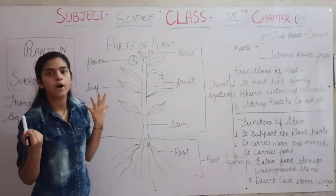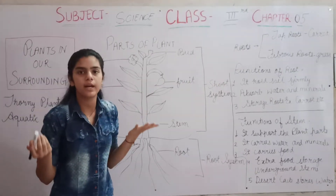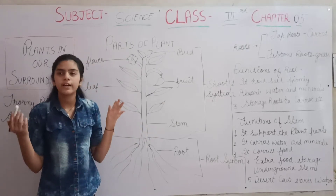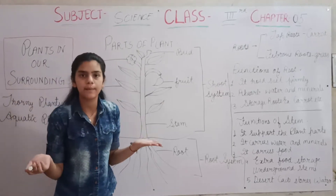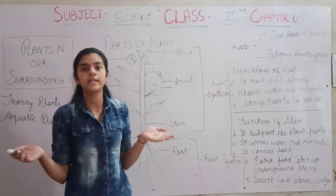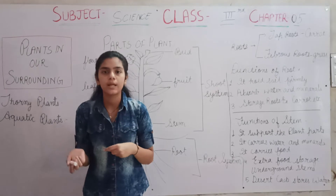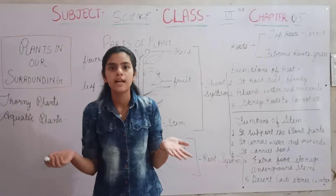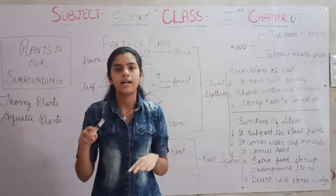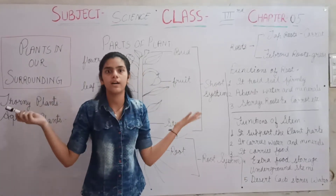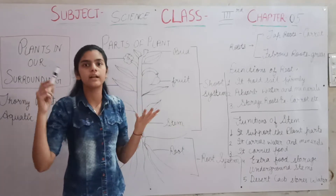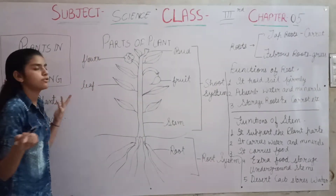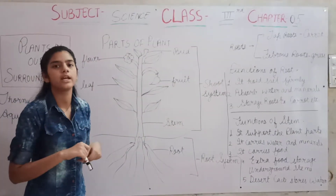We will see which type of plants are there in our surrounding. There are various types of plants — these are of different shapes and different sizes. Like some plants are small, some trees are long and big. These are the various types of plants present in our surrounding.